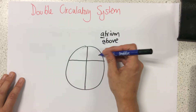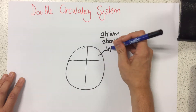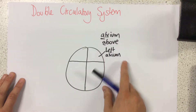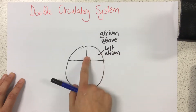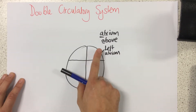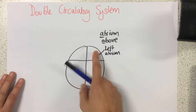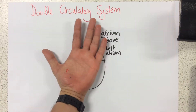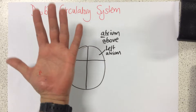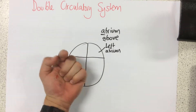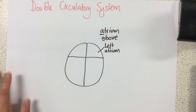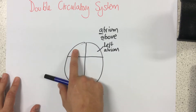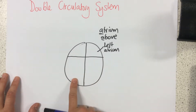This one here is the left atrium. Now this looks confusing because it appears to be on the right-hand side. The way we remember this is because in science, whenever we're looking at something in anatomy, it's like it's looking straight at us. So as a result, this is the left-hand side and this is the right-hand side.